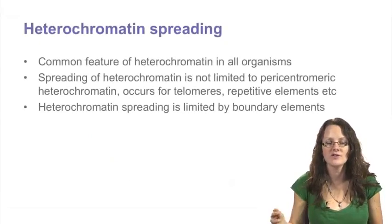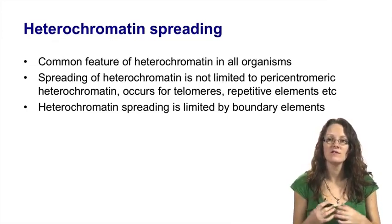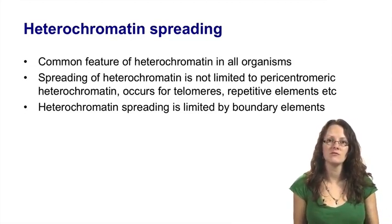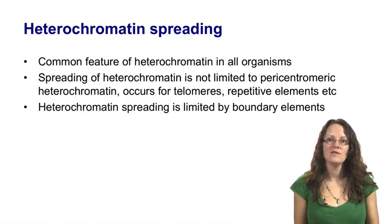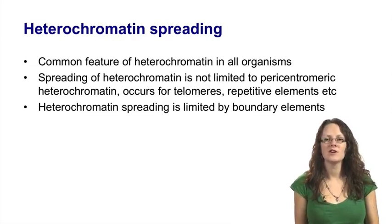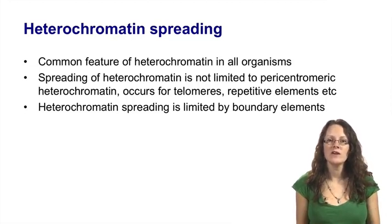Interestingly, this spreading of heterochromatin is not restricted to the fly. We now know it occurs in essentially all organisms and is a common feature of heterochromatin. It's also not restricted to spreading from pericentromeric heterochromatin but can also occur from other regions such as the telomere or repetitive elements that are densely heterochromatinised. Thinking back to X inactivation, the heterochromatin there also spreads throughout the whole X chromosome. Heterochromatin spreading is limited by DNA elements known as boundary elements, which insulate the surrounding region from this spreading.